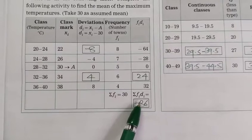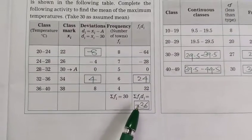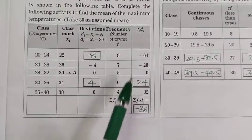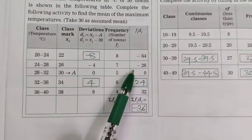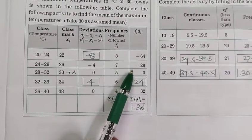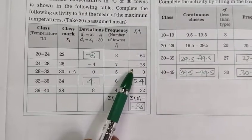And fi di, summation of fi di equal to minus 36. Minus 36 means minus 64 and minus 28, here minus 92, plus 0, plus 24, plus 32.